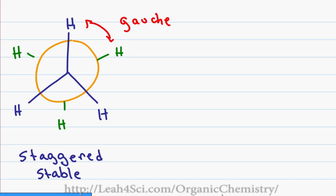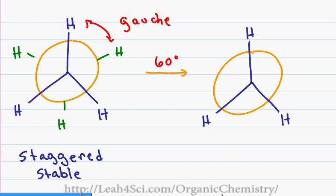If I do a 60 degree rotation where I keep the front carbon steady so the hydrogens haven't moved but the rear carbon was rotated so that the hydrogens are now directly behind the front hydrogens, this is considered the eclipsed conformation.